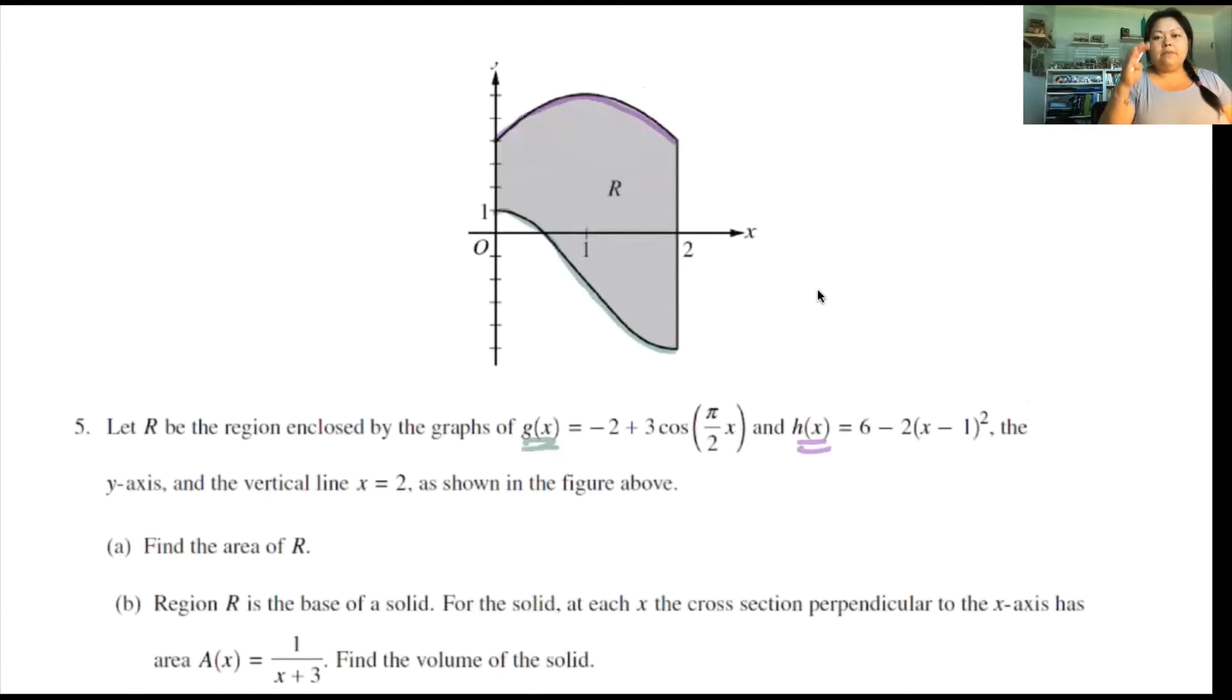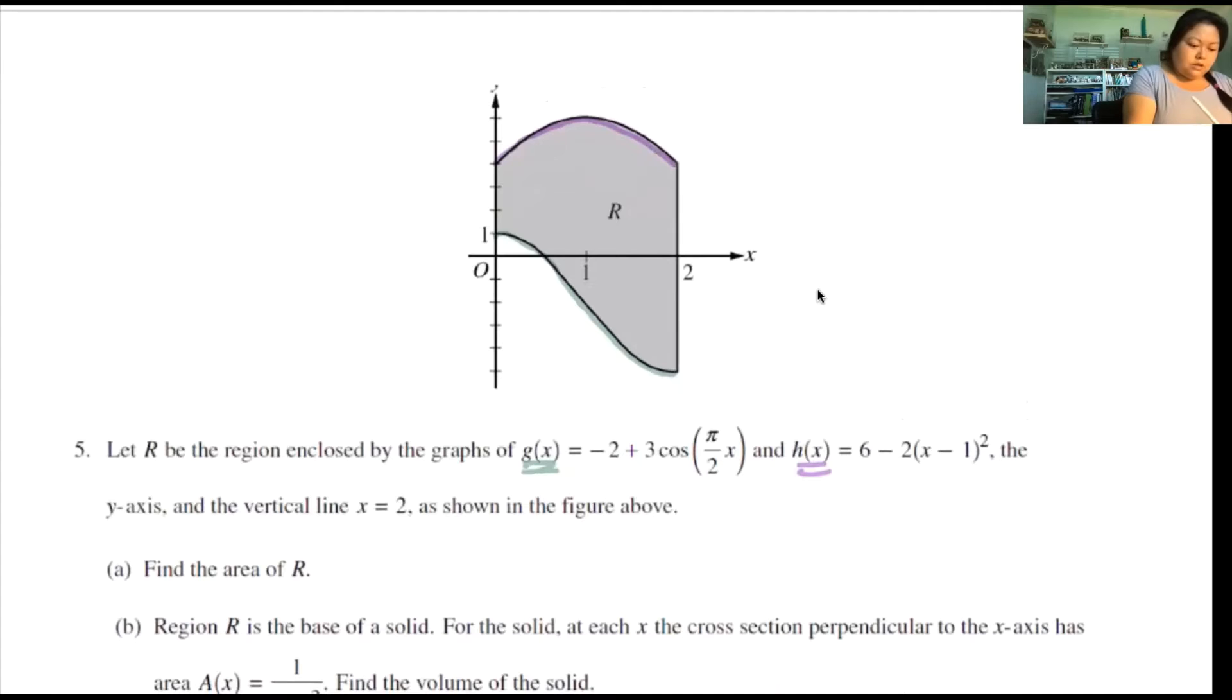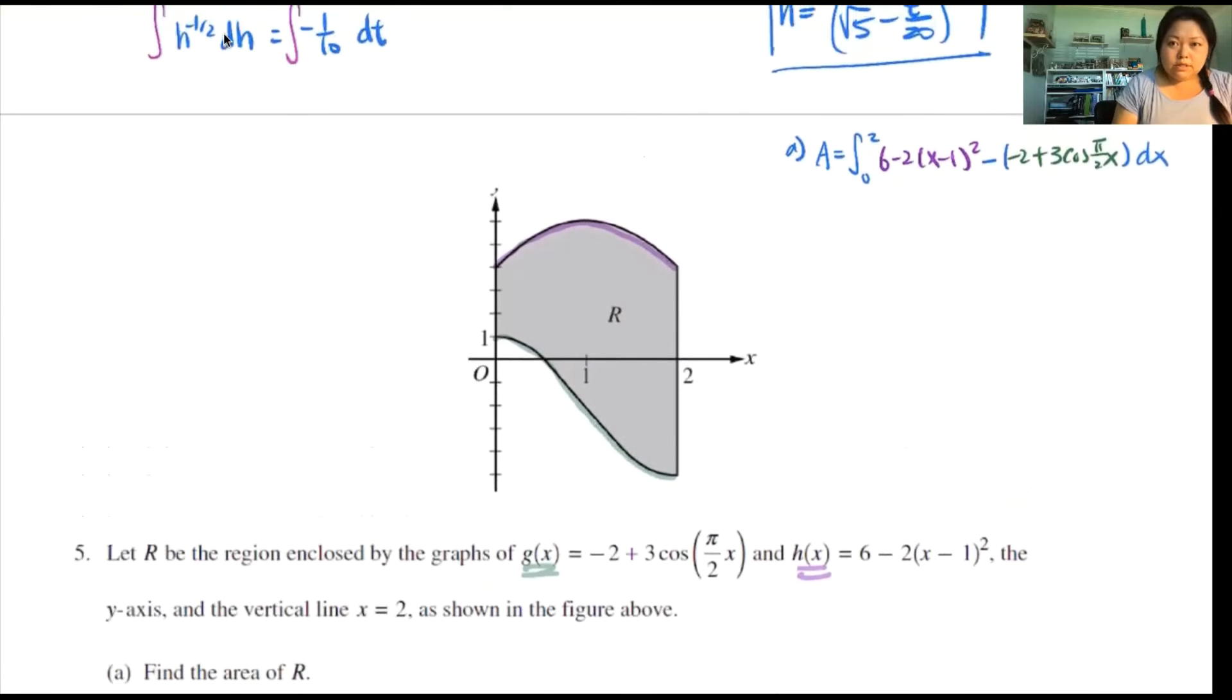Looking from this I can see it's my h minus g, because h is on top and g is on the bottom, so it's my top minus bottom. So part a I'm going to do my work right here so I have enough room. So area is the integral from 0 to 2. My top function 6 minus 2 times x minus 1 squared, subtract my bottom function which is negative 2 plus 3 cosine of pi over 2x and then dx.